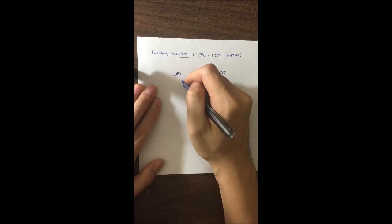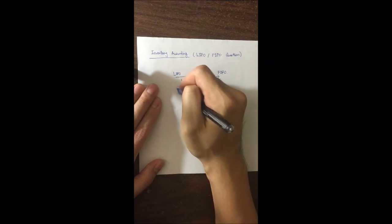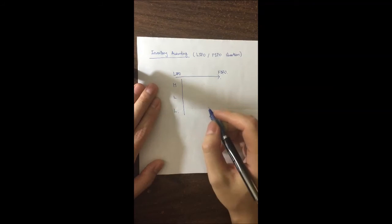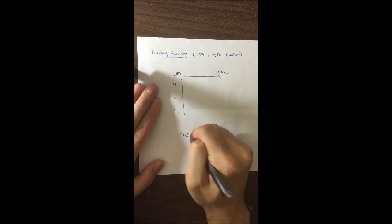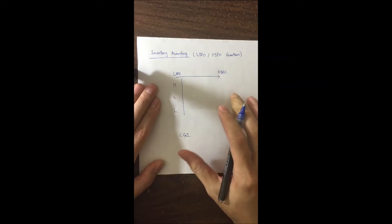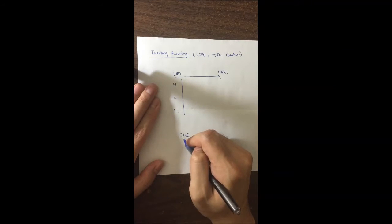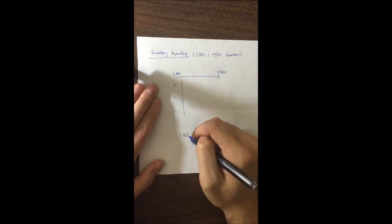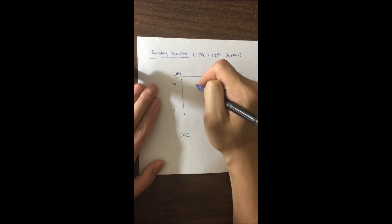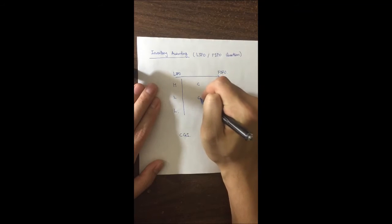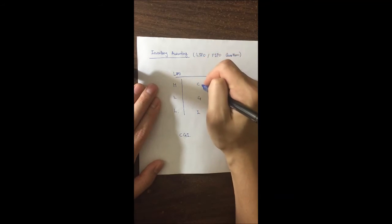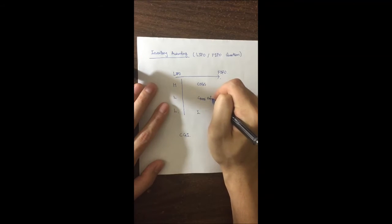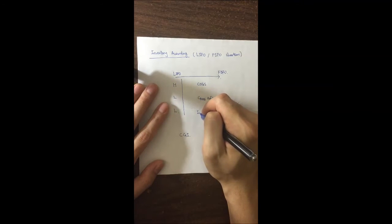The next thing you have to remember is 'L H L L' — that's the pattern for LIFO. The second thing to remember is the acronym CGI. It might remind you of computer-generated imagery, but here it stands for: C is cost of goods sold, G is gross profit, and I is inventory. These are the three line items you need to track.